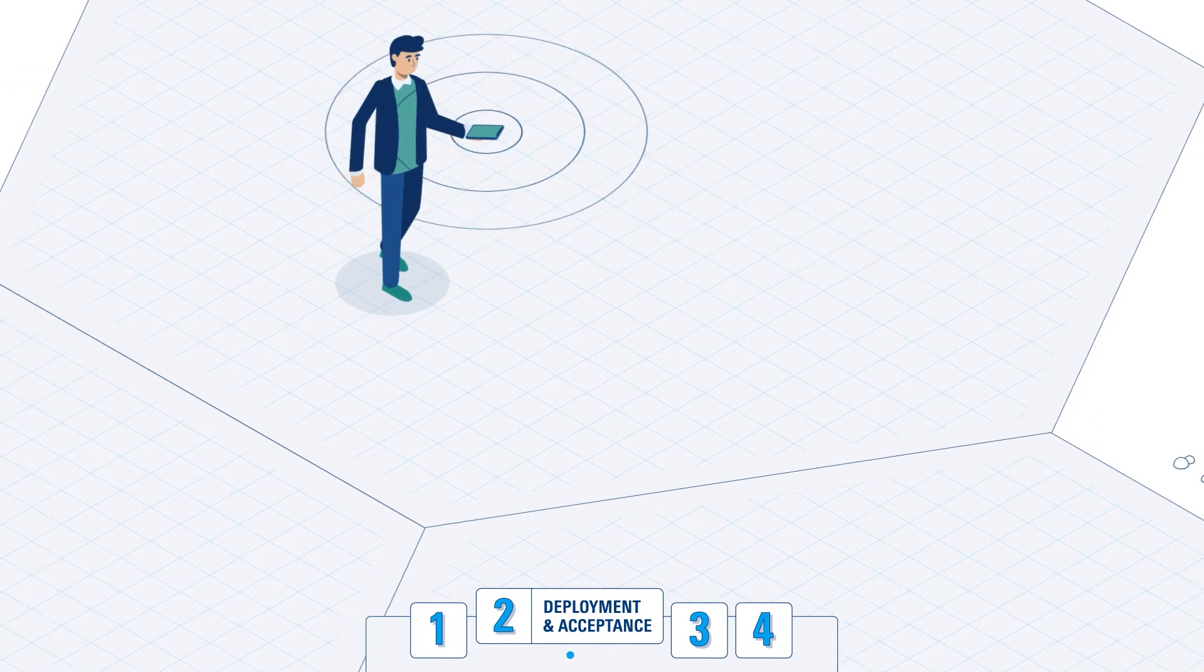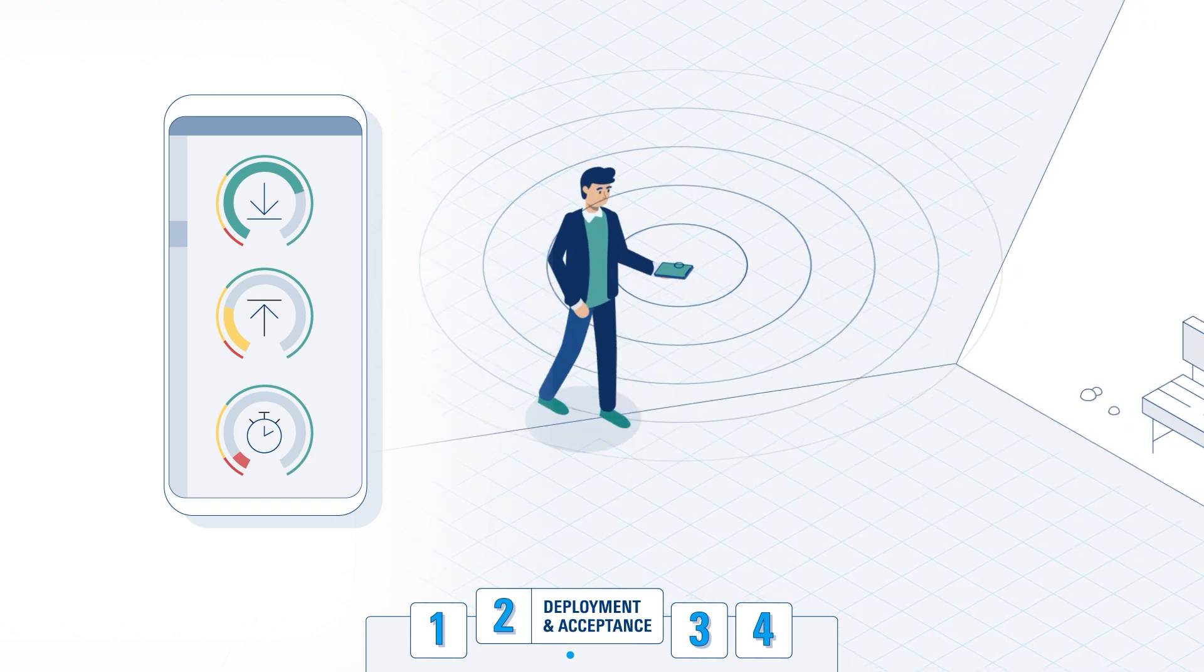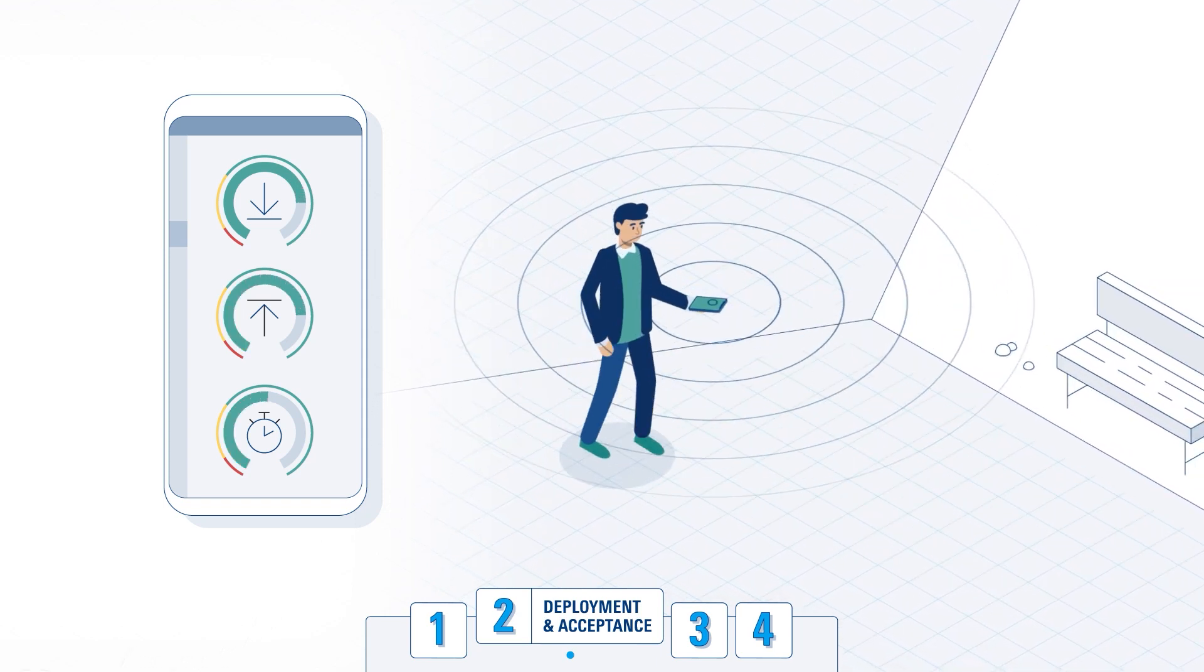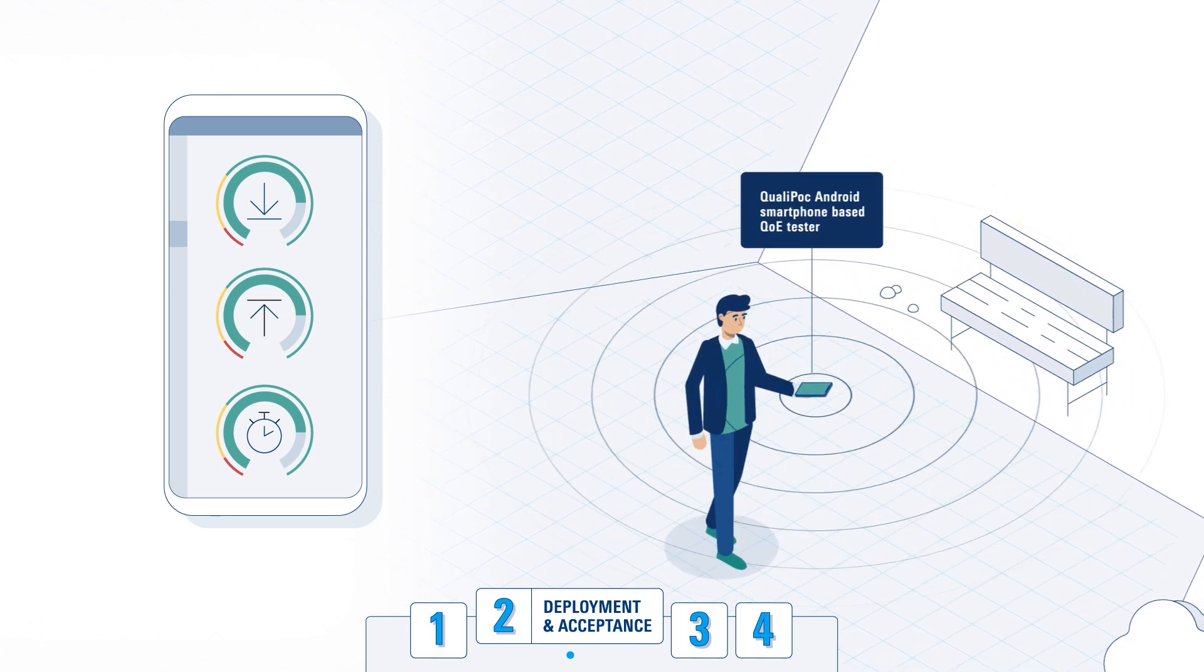Next is the deployment and acceptance phase, including a number of functional tests. You can test the network connection and run performance tests for latency, download and upload speed, and more using a smartphone-based network optimizer such as the Qualipoc Android.